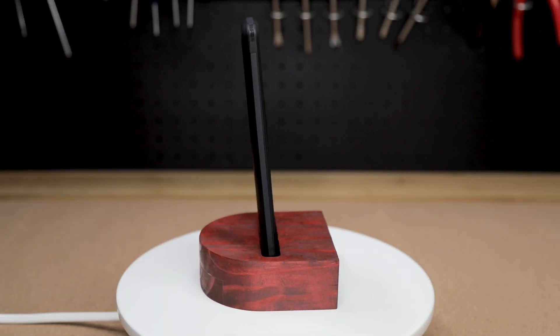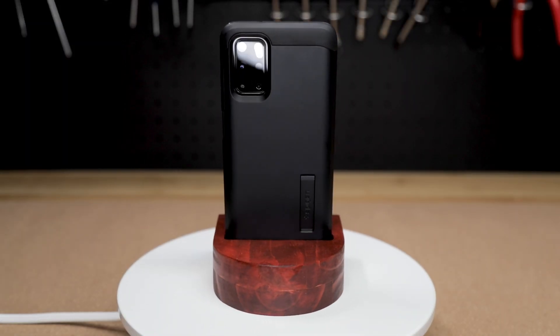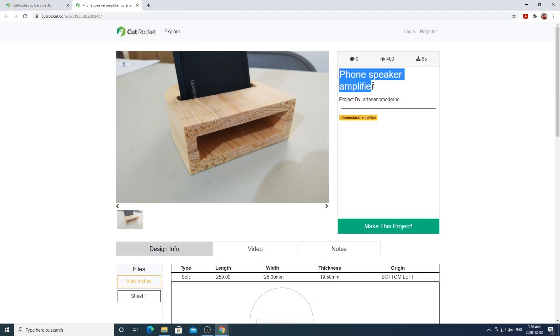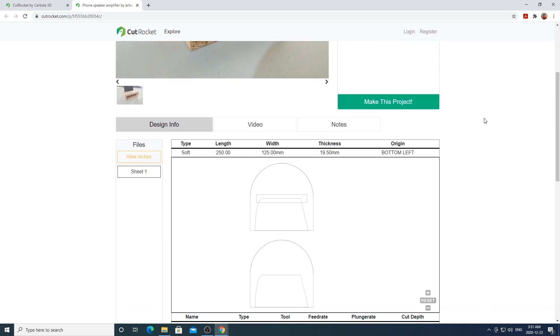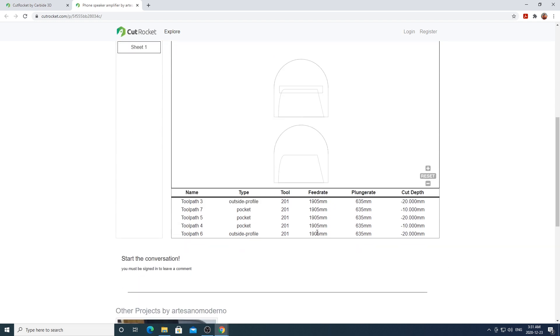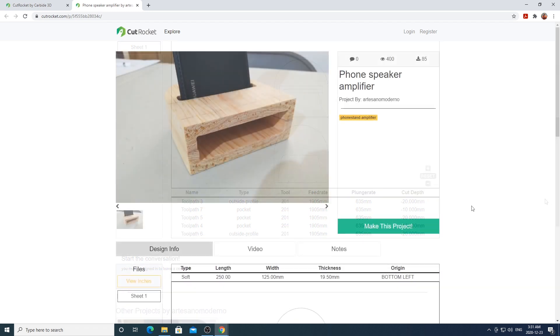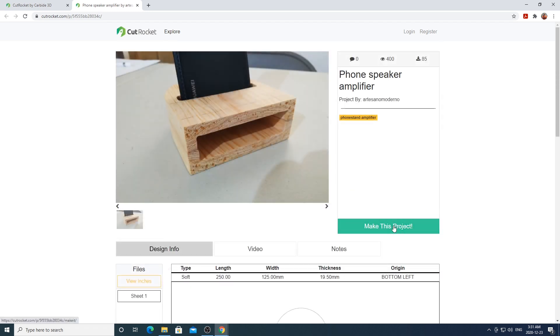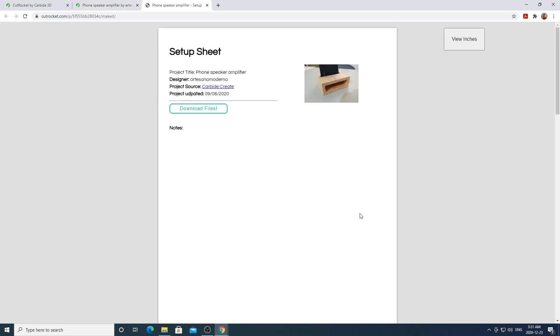The first project we're going to look at is this passive phone speaker slash phone stand. The specific URL for this file will be in the description box below. As you can see if you scroll down cutrocket does provide a preview of the project. It also provides a preview of the material used and the feeds and speeds. Simply click make this project and go ahead and download the file for the project or alternatively you can use my file that I've also provided for download.